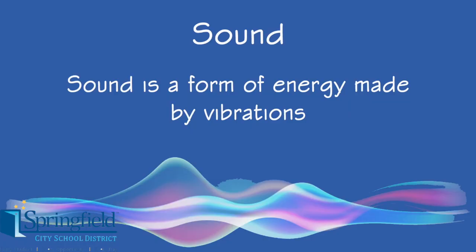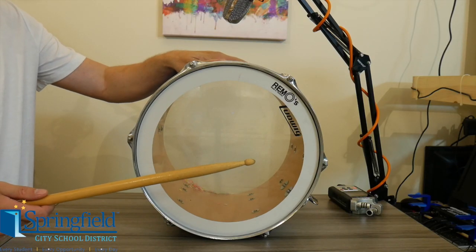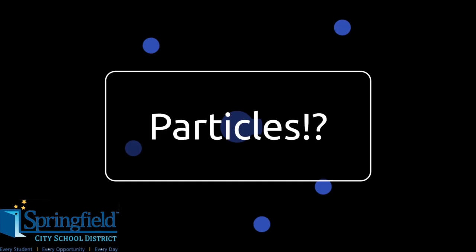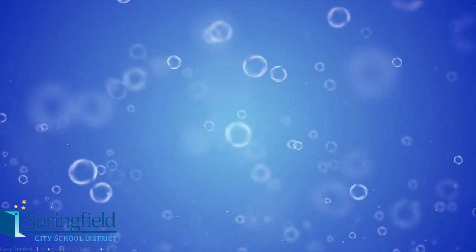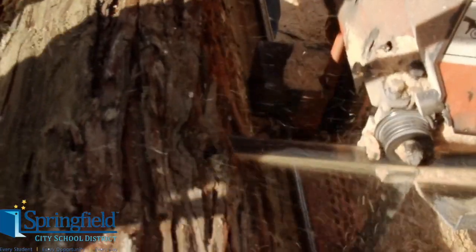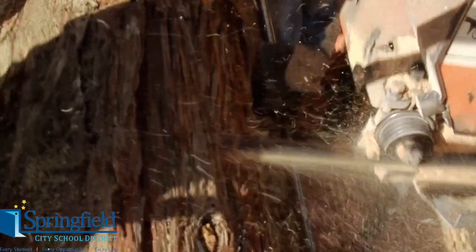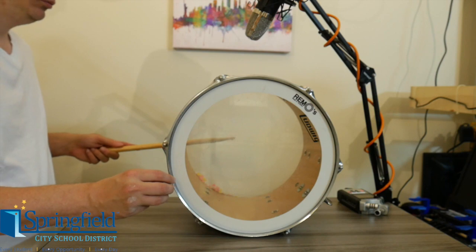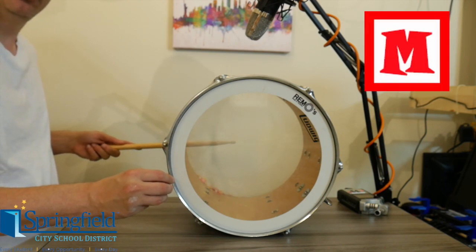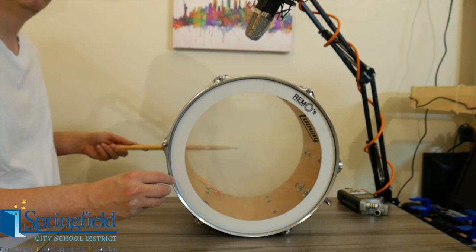Sound is a form of energy made by vibrations. When an object vibrates, like this drum, the air particles vibrate. Isn't that like what light uses? Particles? Yes — small particles in the air move back and forth, which creates sound. So really, you aren't hearing sound as much as you are feeling it. Inside this drum there is air, and when I hit the drum, the air particles vibrate and move back and forth, which creates sound waves.